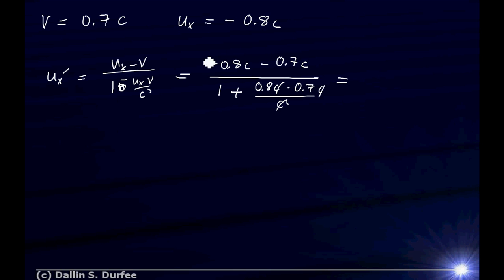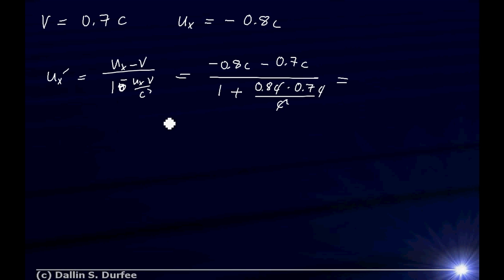Notice that if we use the Galilean transformation, we just have the numerator, which would be bigger in magnitude than the speed of light. But the denominator saves us. Another thing to note: of course the units work, and all the standard things we do to test things. If you got something bigger than the speed of light, you'd know there's a problem.